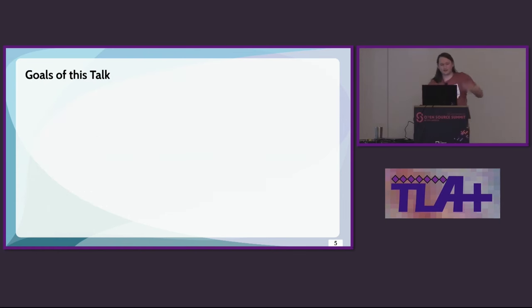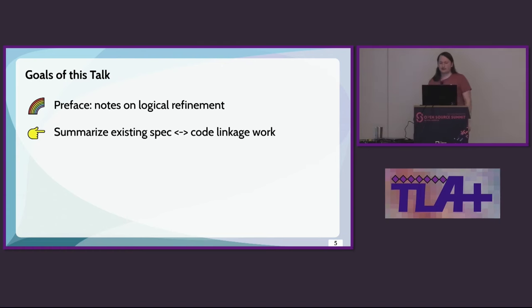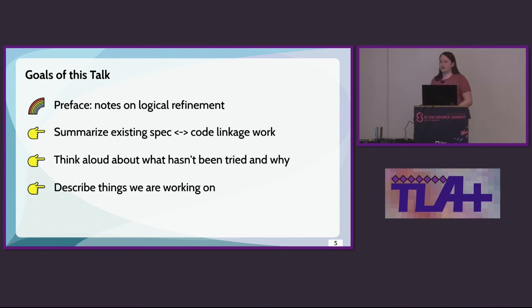So, Kool-Aid aside, what are we actually going to talk about? I'll give a quick preface on refinement. We've seen this a few times already, but these slides are a little bit different. And hopefully, if you're a little fuzzy on the concepts, these can give you another reference point. Then, I'll summarize a bunch of existing Spectacode linkage work. I will think aloud about what hasn't been tried and why. And I'll give a brief teaser on some of the stuff that we're working on, but we're not really ready to claim as active projects yet. Well, they are active projects, but not like things you would try.